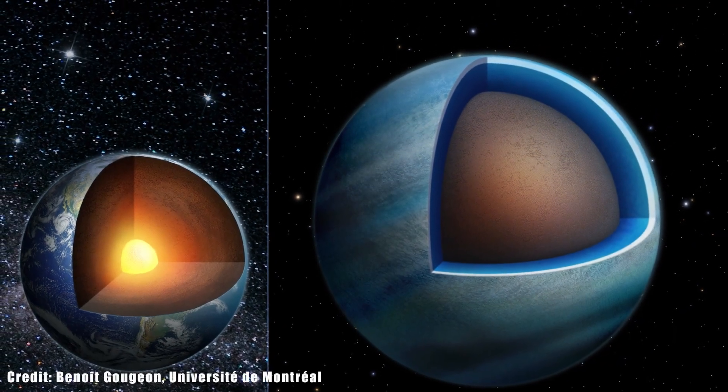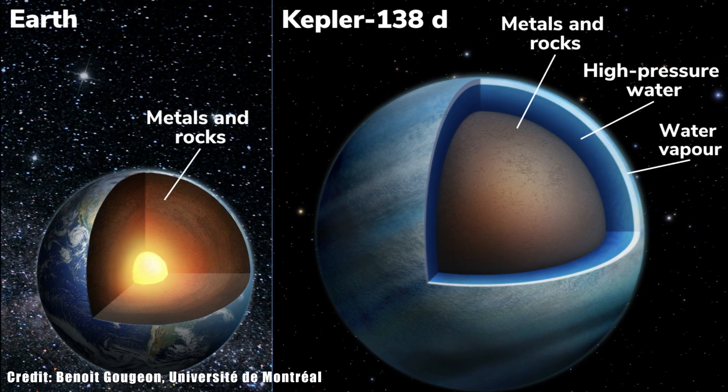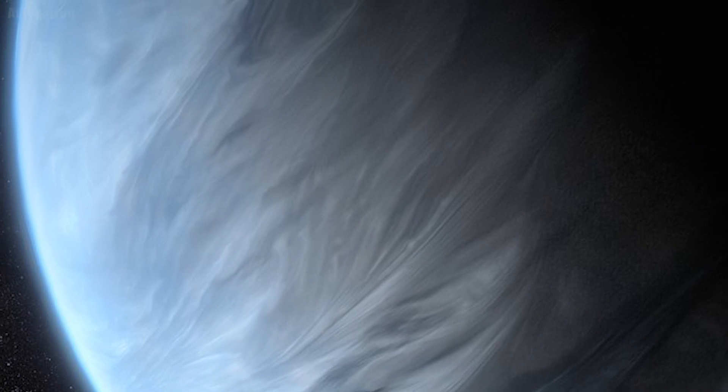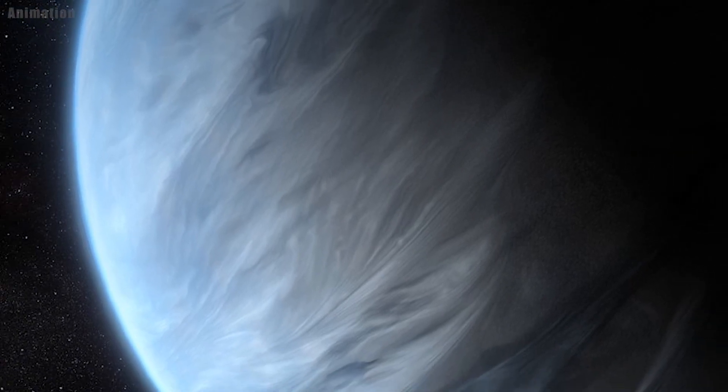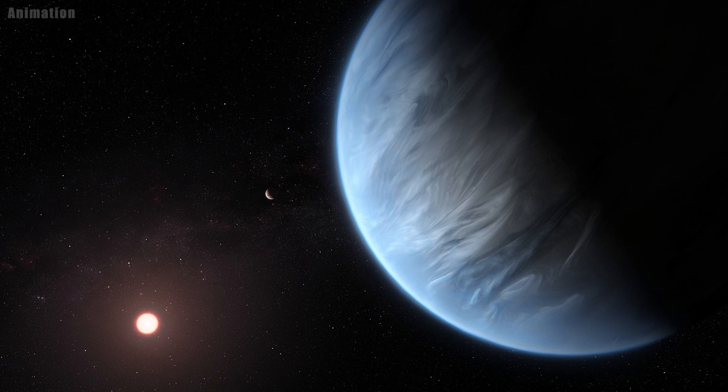Researchers caution that the planets may not have surface oceans like on Earth. The temperature of one planet's atmosphere is likely above the boiling point of water. They expect a thick, dense atmosphere made of steam on this planet, but there could potentially be liquid water at high pressures below it.